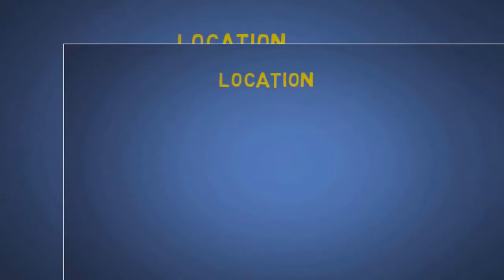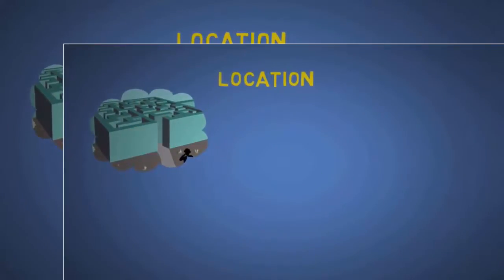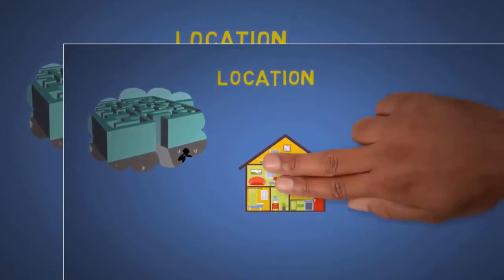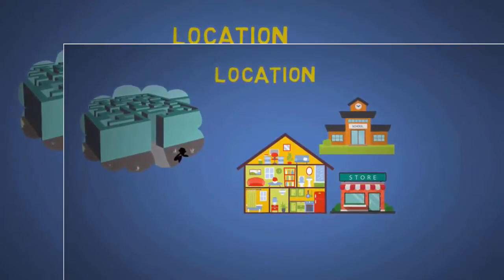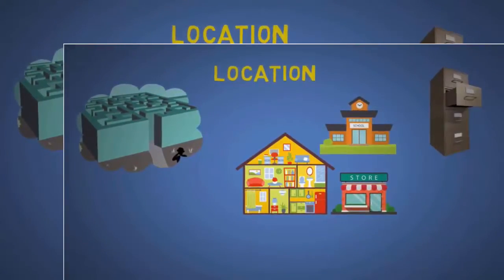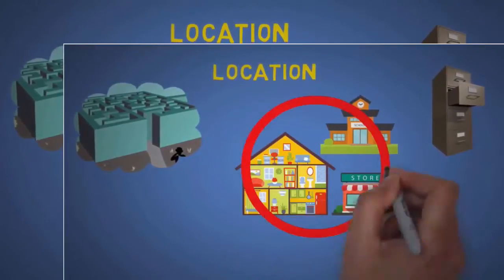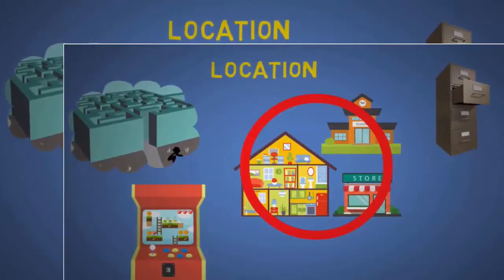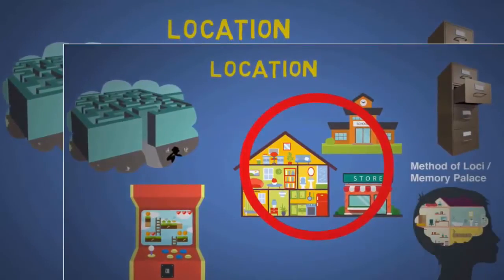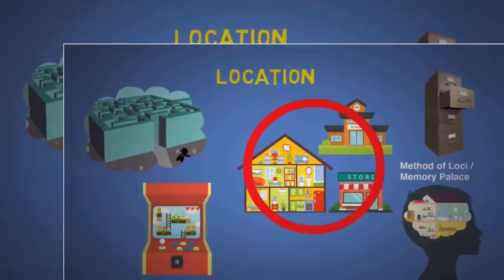L is for location. Our spatial memories are naturally incredible. Think of all the rooms and places you visited in your life and how much you can remember about them. Because one of the greatest secrets to memory is to organize and store things we want to remember in familiar places. You can even store things in video games or places you made up. This is called the method of Loki or memory palace.